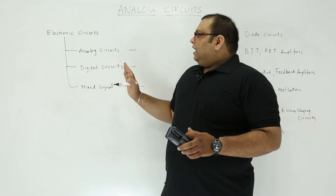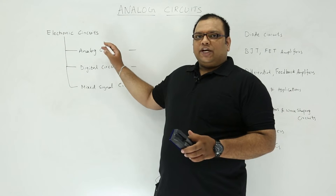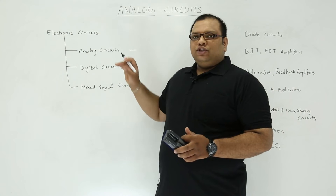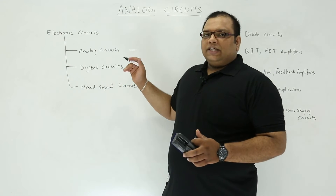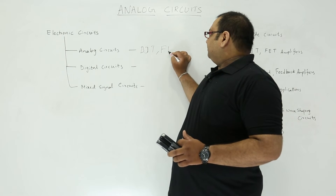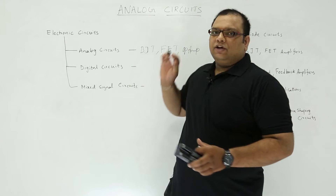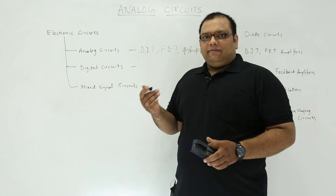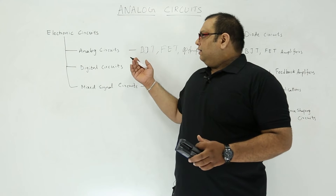In analog circuits, as the name suggests, the input will be analog and the output will also be in analog format, and the circuits consist of semiconductor devices. In analog circuits we discuss BJTs, FETs, and op-amps. Using these elements, we make amplifiers, oscillators, and filters.